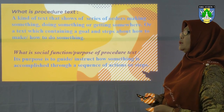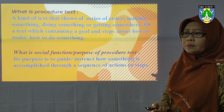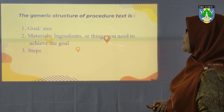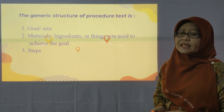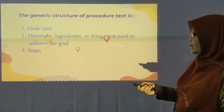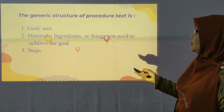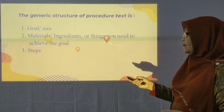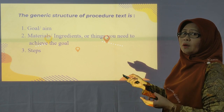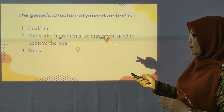Now let's continue about the generic structure of procedure text — or in Indonesian, ciri-ciri teks prosedur. The generic structure, or characteristics, are: first, it must have a goal or aim; second, material or ingredient — things you need to achieve the goal; and the last is steps, which are like instructions.